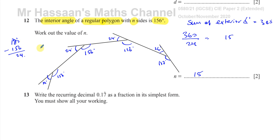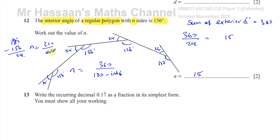So you do 360 divided by the exterior angle, which is 180 minus the interior angle, and that gives you the number of sides. The number of sides is always 360 divided by the size of each exterior angle, because it tells you how many of those angles fit into 360 all the way around. That's the easy way of finding the number of sides when you know the interior angle.